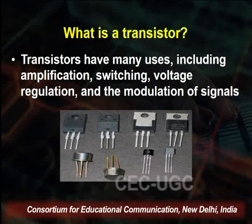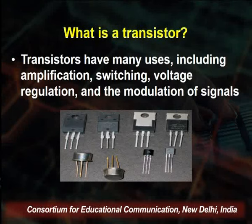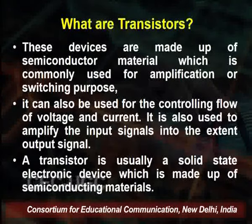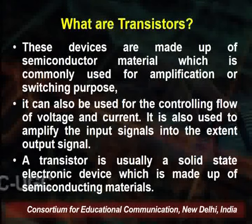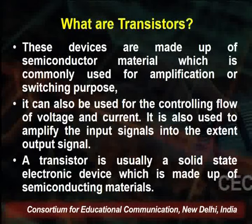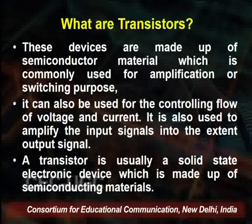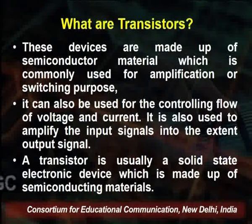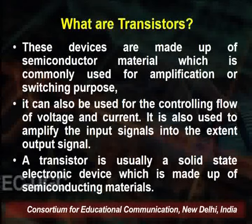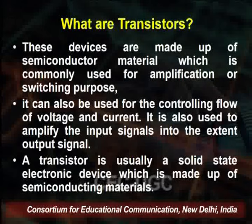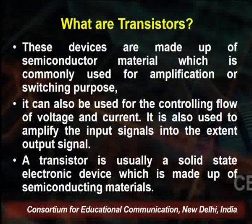On screen you can see the basic transistors used in electronic circuits. These devices are made of semiconductor material, commonly used for amplification or switching purposes. They are also used for controlling the flow of voltage and current in a circuit, and for amplifying a weak input signal into an extended output signal. The basic function of the transistor is to amplify the signal.